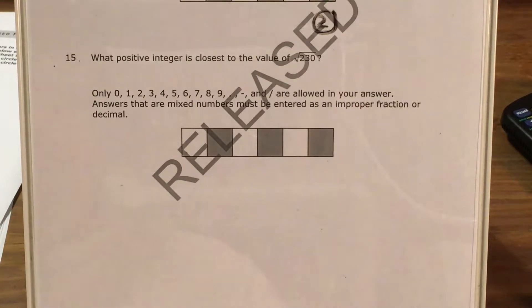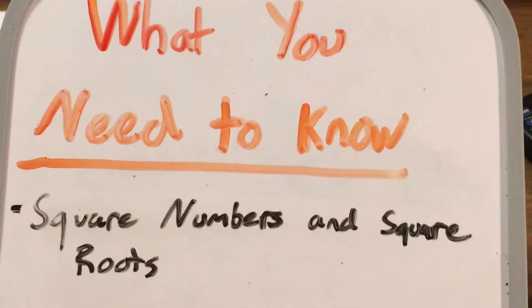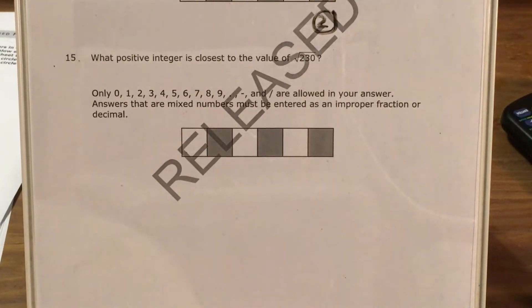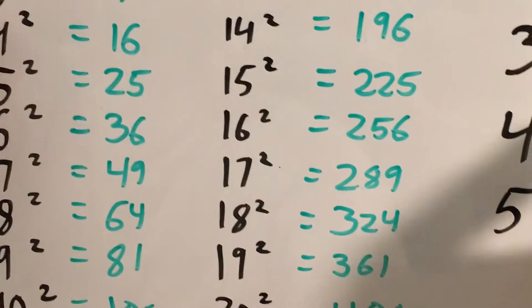Now in order to do a question like this, you need to know your relationship between square numbers and square roots. That's how I'm going to solve this problem. And what I'm going to do is I'm going to bring up my big board where I have written some square numbers already.